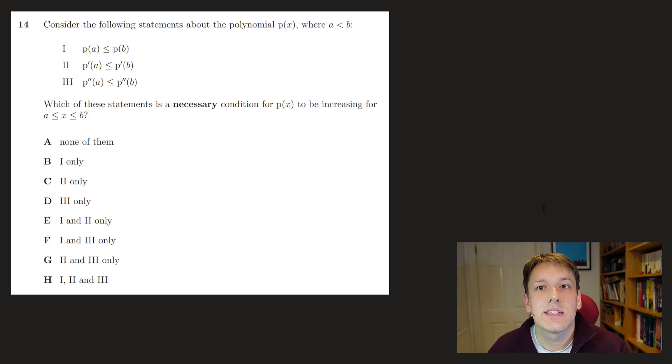Right, question 14, it says, consider the following statements about a polynomial P of X where A is less than B, and it says, which of the statements is a necessary condition for P of X to be increasing for A less than X less than B? And so, well, 1 is pretty obviously necessary, right? If the function is increasing, it doesn't have to be strictly increasing necessarily here, that's why we've got less than or equal tos everywhere, but if this is my value A and this is B, and then if it's going to be increasing, well, P of B certainly can't be below P of A, so sure, that one has to be true.